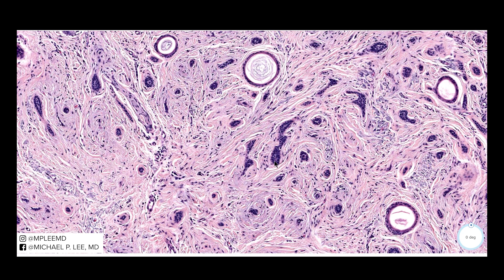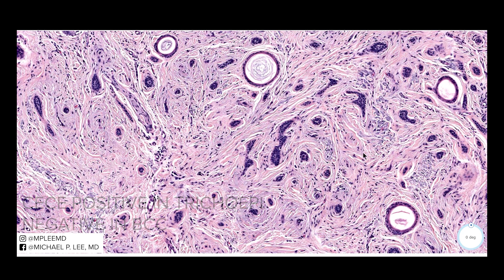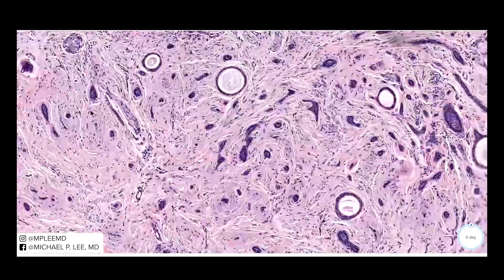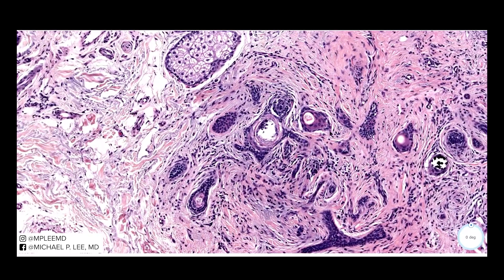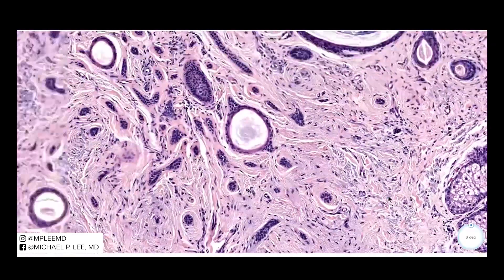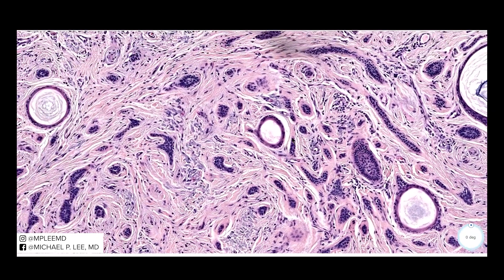There's another stain called P75, which is a neurotrophin receptor. This will be positive in trichoepithelioma and negative in morpheaform basal cell carcinoma. Finally, CEA — especially in areas that look like eccrine differentiation — is helpful in differentiating this from desmoplastic syringomas, because desmoplastic trichoepitheliomas will be negative for CEA while desmoplastic syringomas will be positive for CEA.